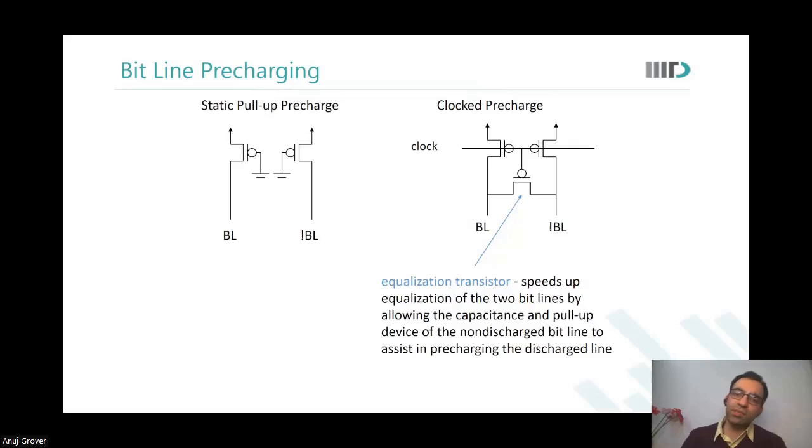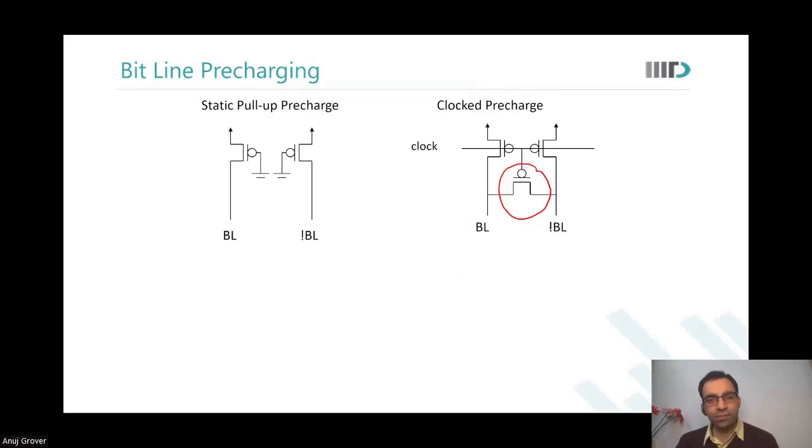Do you notice there is this extra transistor over here? What do you think is the role of this transistor? Can it be that it gives both bit line and bit line bar at the same level? It gives both bit line and bit line bar the same level, you mean it equalizes them? Yes, so after every clock cycle it will set them at the same voltage level.